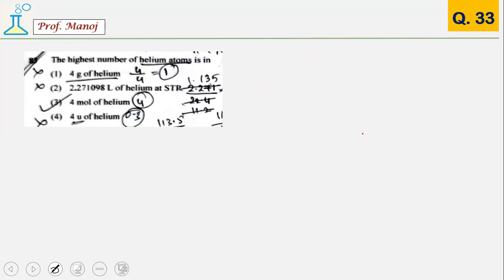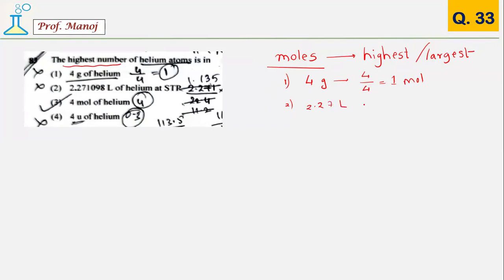This problem can be solved by multiple ways. A simple one is to calculate number of moles in each case. They are asking highest number. Option 1 contains 4 gram, which is 4 upon 4, that is 1 mole. 2.7 liter, that is 2.27 upon 22.7, which is 0.1. Then you can see 4 mole. I do not think we need to search anything further. 4 mole, nothing given is higher than that. This is the answer: the highest number of atoms.